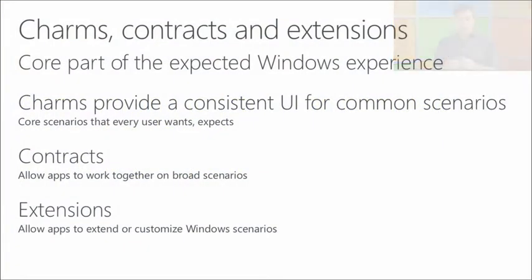What can you do with contracts? There are the charms in Windows 8 — search, share, settings, and devices — and you can be part of that experience. The charms offer a consistent UI so users always know where search or share is. Your settings can be reached through the settings charm, or you can share from your app through the share button. You can also work together with other apps.